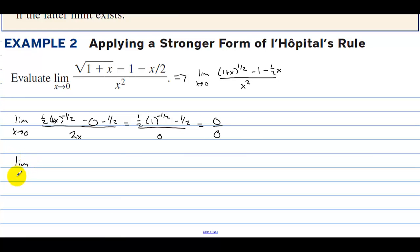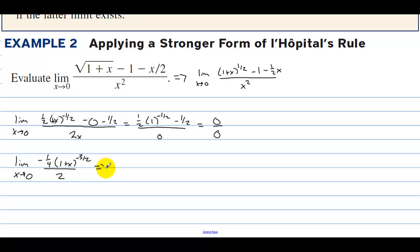Now we can take the derivative again — that's the stronger form of L'Hopital's Rule. We get negative 1/4 times (1 plus x) to the negative 3/2 as the derivative of that piece, the rest becomes 0, and the derivative of the denominator is 2. Plugging in 0: we have negative 1/4 times 1 to the negative 3/2, all over 2. Since 1 to any power is just 1, the answer is negative 1/8.